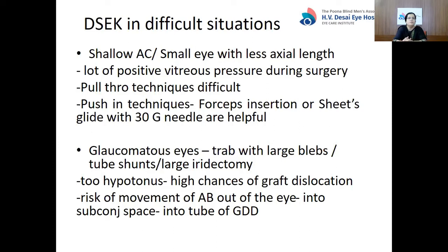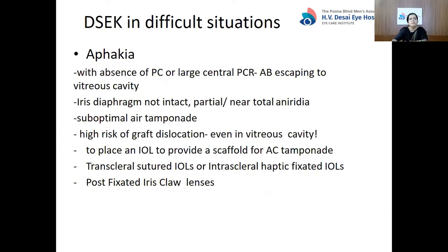Another difficult situation is glaucomatous eyes where a trabeculectomy has been done with large blebs or tube shunts, or where large iridectomies are present. These eyes are too hypotonous, resulting in a high chance of graft dislocation post-operatively. There is a risk of the air bubble moving out of the eye into the subconjunctival space or into the tube of the drainage device. A phakic eye is also a difficult situation — with the absence of AC depth and a large central PCR, there is a chance of air bubbles escaping to the vitreous cavity. If the iris diaphragm is not intact and there is partial or near-total aniridia, there is suboptimal air tamponade and high risk of graft dislocation into the vitreous cavity.